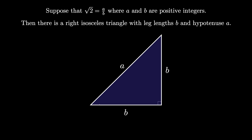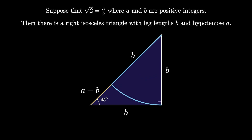The lower left angle in this triangle is a 45-degree angle. Now let's use the right side of the triangle as a radius to sweep out a circular arc that intersects the hypotenuse. The intersection point on the hypotenuse splits the hypotenuse into lengths of a minus b and b.